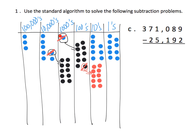Going back: instead of zero — well, first I had one, then I had zero — now I'm going to have ten in the thousands place. So I have seven, now I have six in the ten thousands, and I'm supposed to take away two — I can do that. And lastly, I have three in the hundred thousands place, take away nothing. So I did a lot of regrouping.